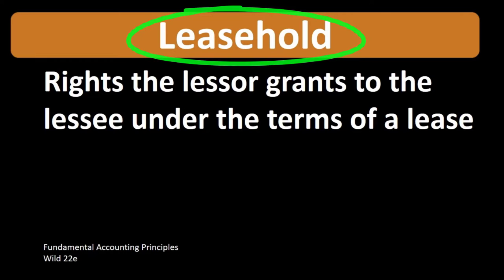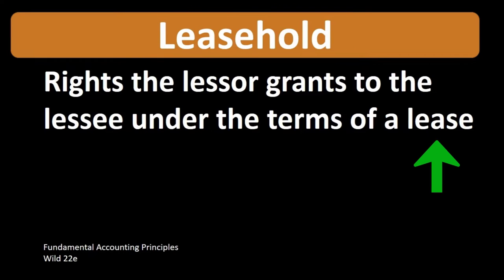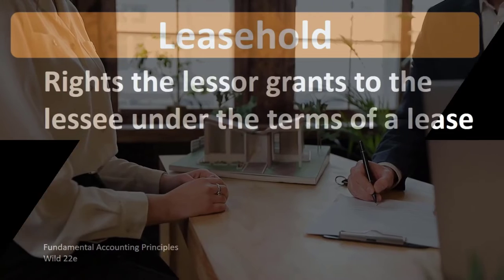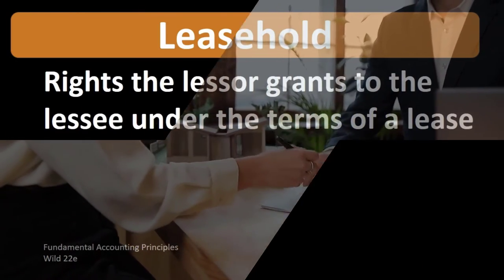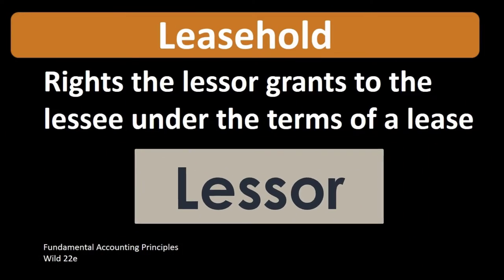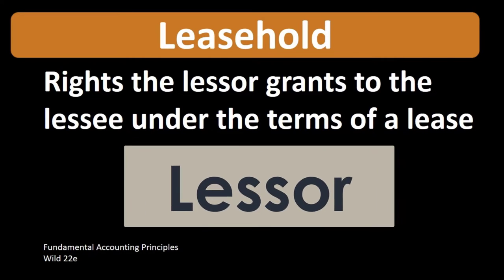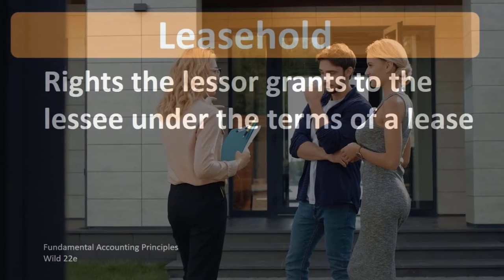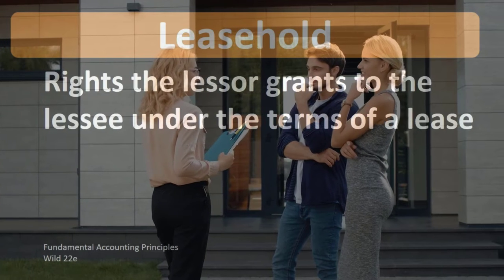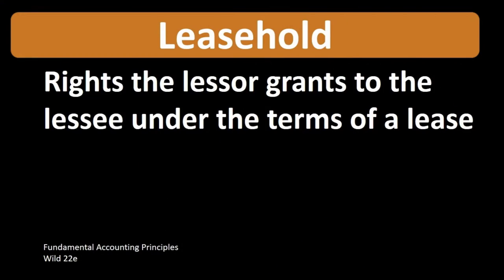When we're thinking about the leasehold, we're thinking about those lease terms — the lease involving a piece of property, with at least two parties involved: one being the lessor, the owner of the property who is granting use of that property, and one being the lessee, the one that is using the property but does not have ultimate ownership, meaning the property will revert back to the owner, the lessor, at the end of the lease period.